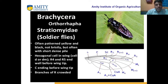Another family is Stratiomyidae, also called soldier flies. They are often patterned yellow and black and are not bristly. They have short dense pile and hexagonal cells in wings. R4 and R5 end near before the wing tip, and the costal vein ends before the wing tip with the branching of R crowded.